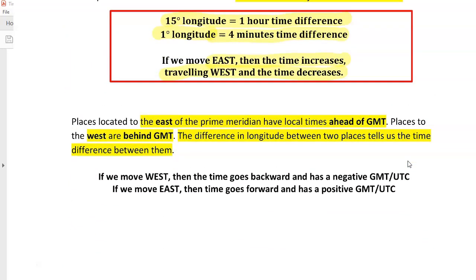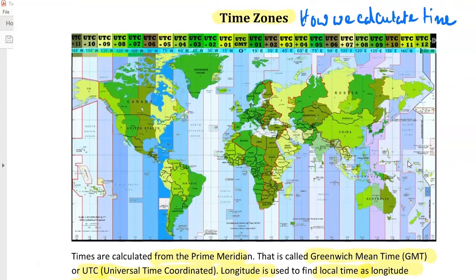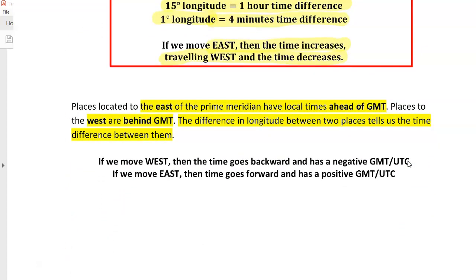Places located to the east of the Prime Meridian have local times ahead of GMT. We are ahead of Greenwich Mean Time because we are east of the Prime Meridian. Places to the west are behind Greenwich Mean Time. To the east, we are ahead; to the west, they are behind. As we move west, time effectively goes backwards and has a negative value. Moving east, time goes forward and has a positive value.